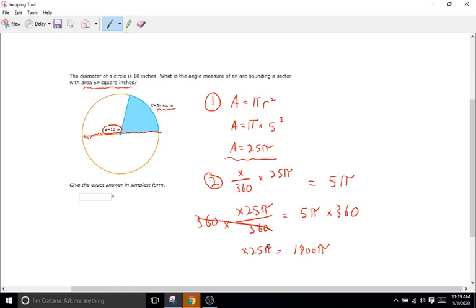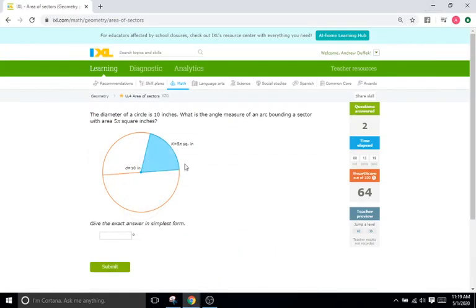So now we can just cancel out the pi's really easily. So pi's and pi's are gone. And we're left with x 25 or 25 x equals 1800. So to get x by itself, we just got to divide the 25 out, divide, divide, cross the 25s out. So we're left with x equals, and then what is 1800 divided by 25? That is going to be 72. So x is going to equal 72 degrees. So we go back. We type in 72 degrees. Remember, not pi, not 72 pi. This is just the degree value. And it is indeed correct.